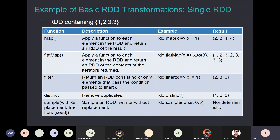So rdd.map — inside the map parenthesis is the actual map code. Map is a function and you can write your own code inside it. Here what I'm trying to do is increment the values by one. So 'x => x + 1' means x refers to one element of the RDD, the arrow means you produce the output x plus one. You can see the result is two, three, four, four.